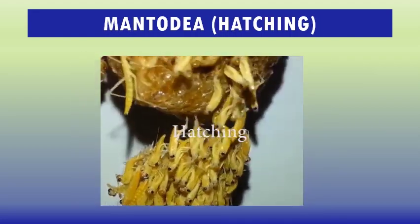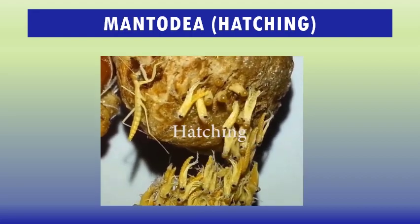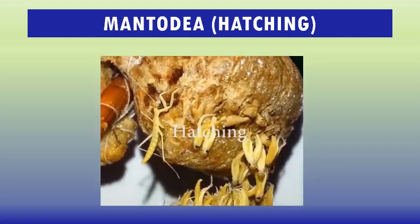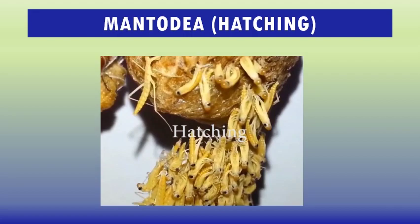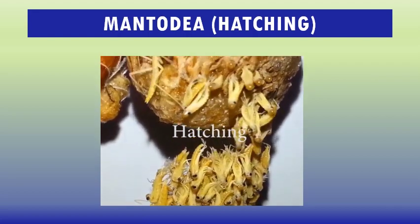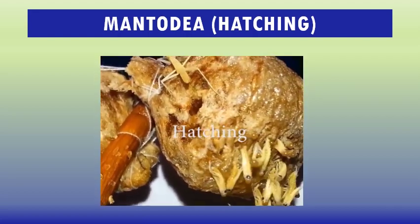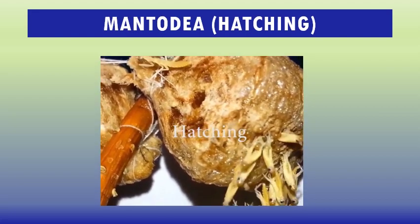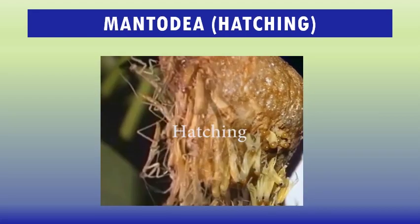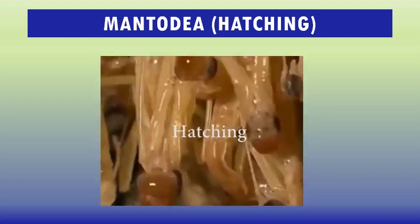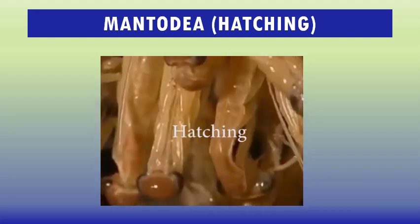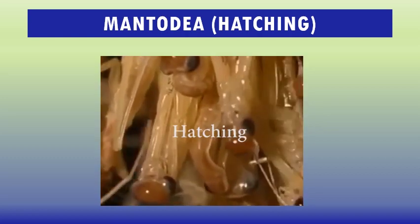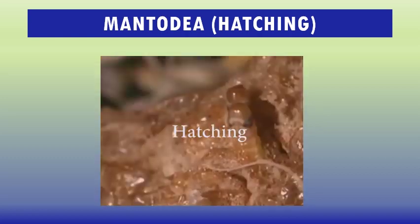Regarding hatching: in temperate climates, adults do not survive the winter and the eggs undergo diapause, hatching in the spring. For smaller species the eggs may hatch in 3–4 weeks, as opposed to 4–6 weeks for larger species.